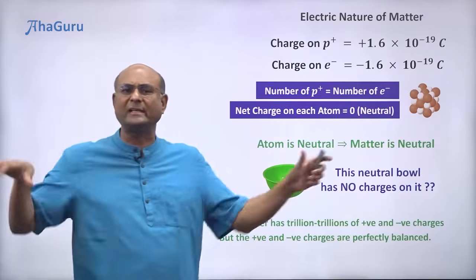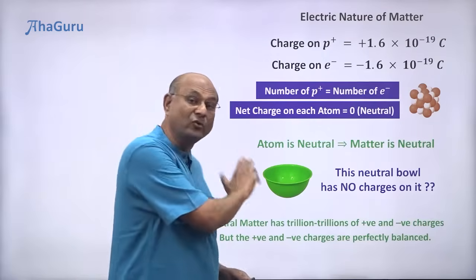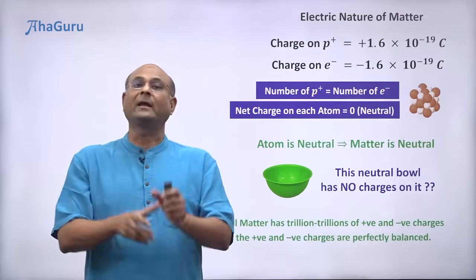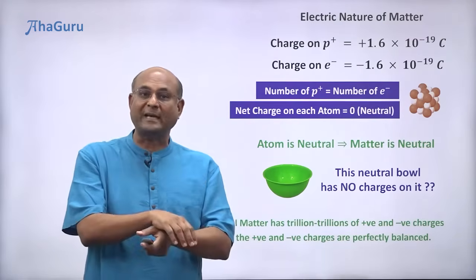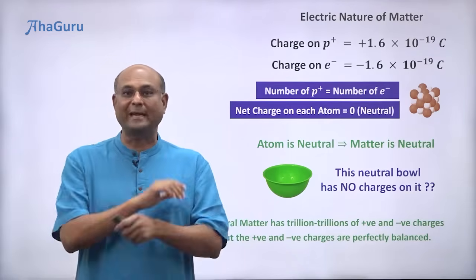So the positive and negative, they are perfectly balanced, which means the net charge on this bowl is zero. So whatever material you see around you, most of the matter is always neutral, but that doesn't mean that it doesn't have electric charges inside. It has a huge amount of positive charge and a huge amount of negative charge, except the positive and negative, they are perfectly balanced.